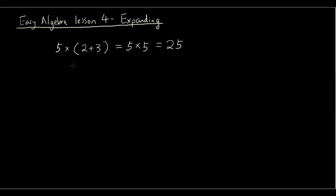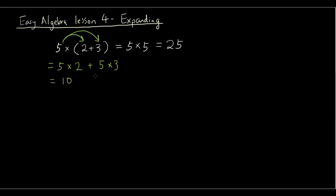This expression can be rewritten the same way using our expanding technique. When we have a number in front multiplied by a number of terms in the brackets, we can take the number in front and multiply each term separately on the inside to get the same result. So 5 times 2 plus 5 times 3 becomes 10 plus 15, which is 25 again.